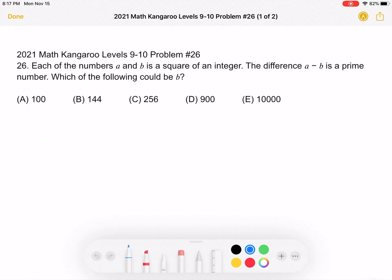This is the 2021 Math Kangaroo Levels 9-10 Problem Number 26. Each of the numbers A and B is a square of an integer. The difference A minus B is a prime number. Which of the following could be B?